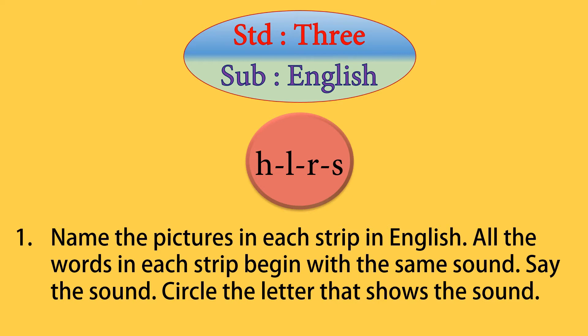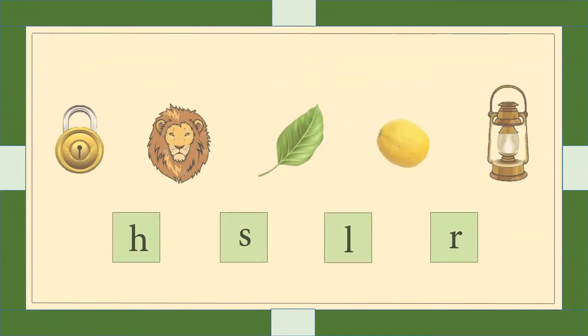तो चलो देखते हैं, First Strip यानि पहली सत्तर। यह है First Strip यानि पहली सत्तर और इस पहली सत्तर में आपको 5 पिक्चर्स नजर आ रहे हैं। हमें सवाल के मताबिक क्या करना है? सबसे पहले तस्वीरों के नाम अंग्रेजी में बताना है। एक बात याद रहे, यह तमाम तस्वीरों के नाम एक ही आवाज़ से शुरू होते हैं।